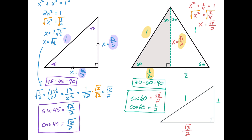So that means our 30 degrees is down here and our 60 degrees is now up here. Now if we look at sine of 30 degrees — sine of 30 is 1/2 over 1, so that's 1/2. And cosine of 30 is the adjacent side over 1, which is √3/2.